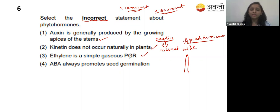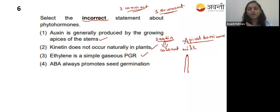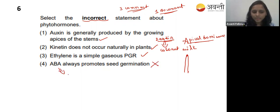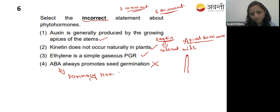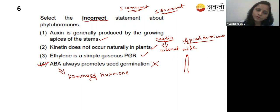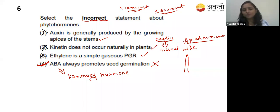Option four - ABA always promotes seed germination. No - ABA is a dormancy hormone, it does not promote seed germination. So this statement is wrong. Since they are asking for the incorrect statement, option four is the correct answer. The other options are correct statements about phytohormones.